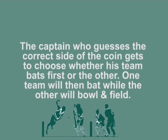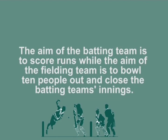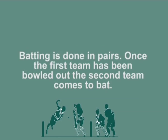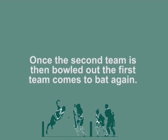One team will then bat while the other will bowl and field. The aim of the batting team is to score runs, while the aim of the fielding team is to bowl 10 people out and close the batting team's innings. Although there are 11 people in each team, only 10 need to be bowled out as you cannot have one person batting alone. Batting is done in pairs. Once the first team has been bowled out, the second team comes to bat; once the second team is bowled out, the first team comes to bat again.